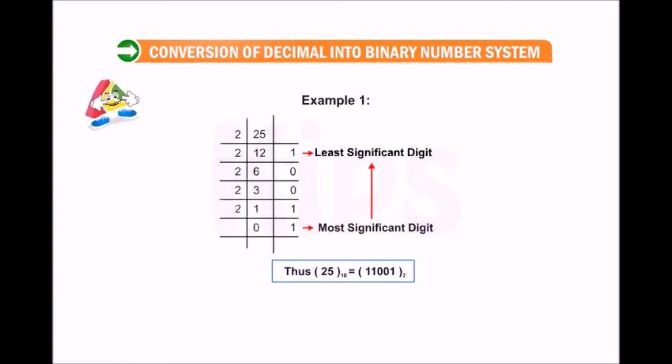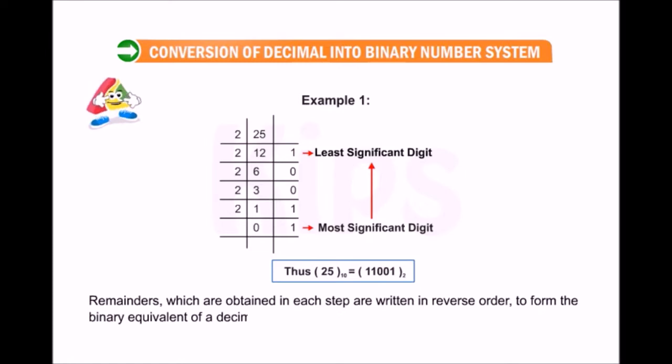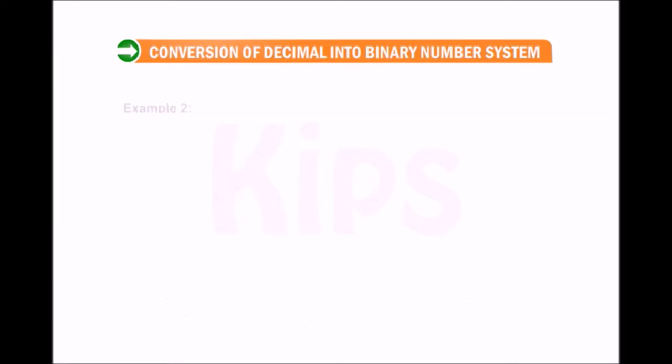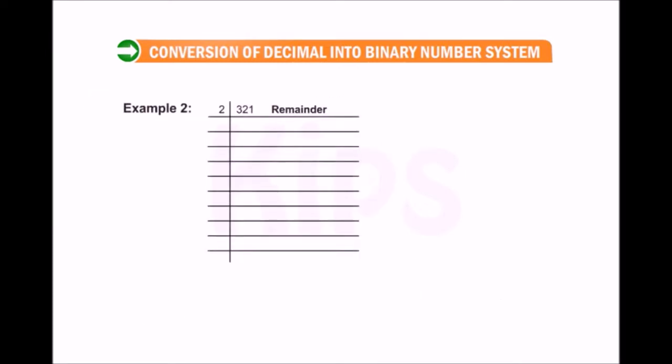The base of the number is given as subscript. Remainders which are obtained in each step are written in reverse order to form the binary equivalent of a decimal number. Example 2: Dividing 321 by 2 gives us quotient 160 and remainder 1.